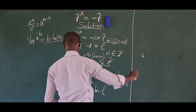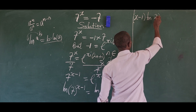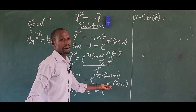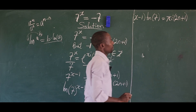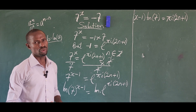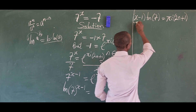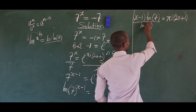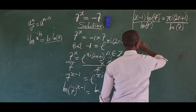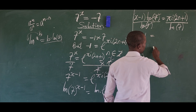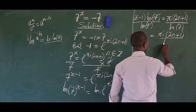This gives us (x−1)·ln(7) equal to πi(2n+1). The quantity we're looking for is still attached to ln(7), so we divide both sides by ln(7). This leaves us with x−1 is equal to πi(2n+1) all over ln(7).